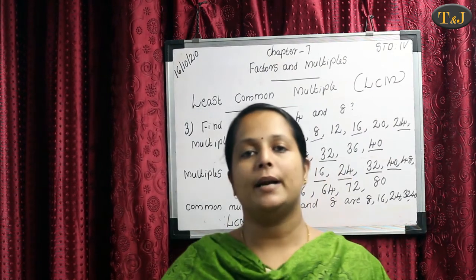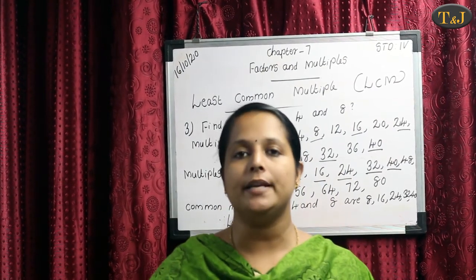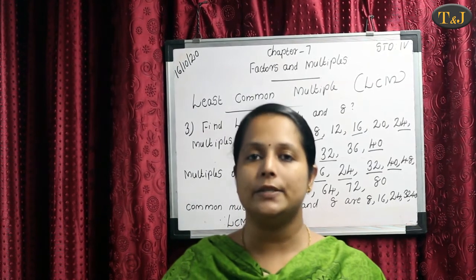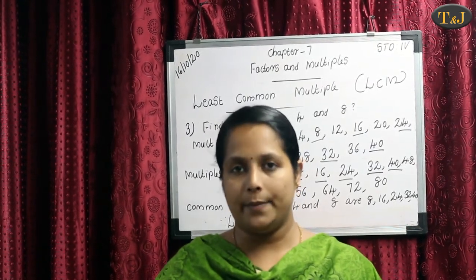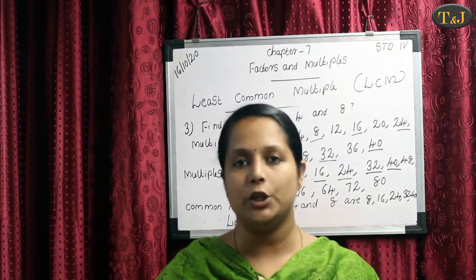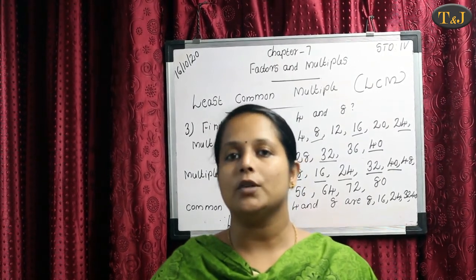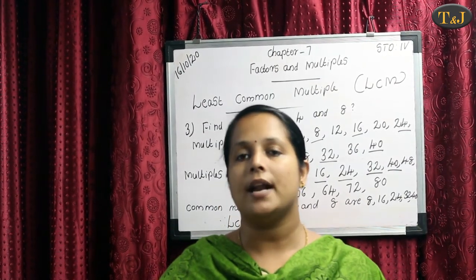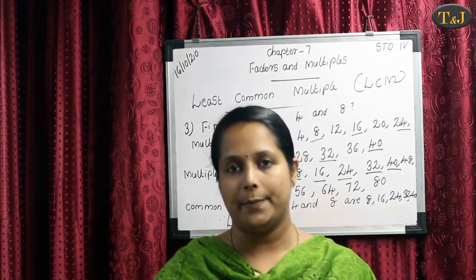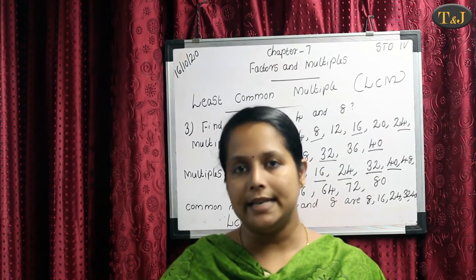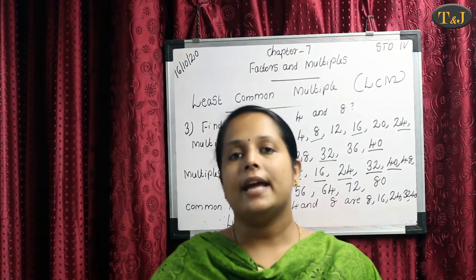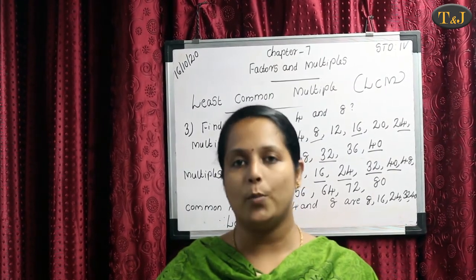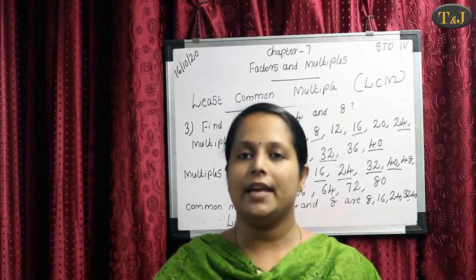So today we learned about multiples and least common multiples. Multiples means that when we multiply a number by 1, 2, 3, 4, 5, etc., its result is known as its multiples. For LCM: first find the multiples of the given numbers, then find the common multiples, and finally the least common multiple is the smallest of the common multiples. I hope all of you understood today's class. Take care, bye, thank you.